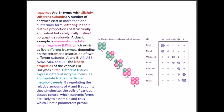Let us talk about isozymes. Isozymes are enzymes with slightly different subunit contents. For example, mammalian lactate dehydrogenase, or LDH, exists as five different isozymes in the mammalian body.